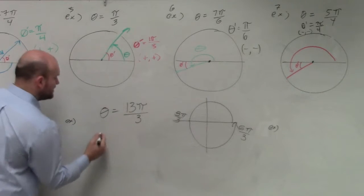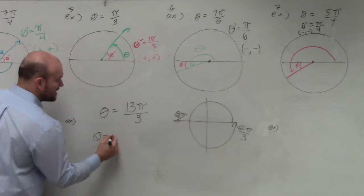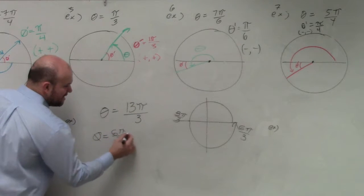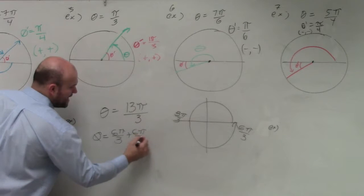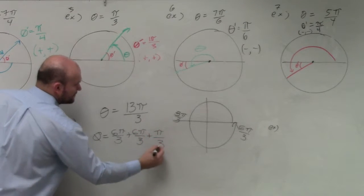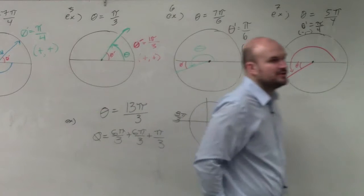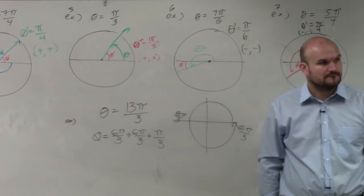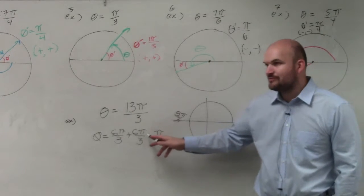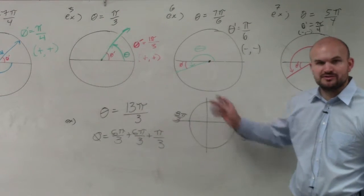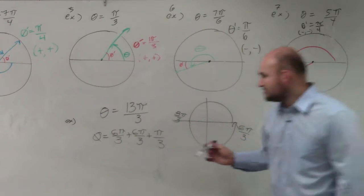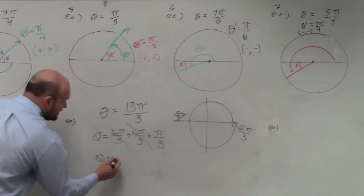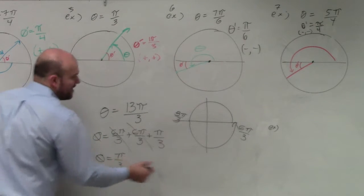What I'm going to do is rewrite this using the period as a fraction. So 13 pi over 3 is the same thing as 6 pi over 3 plus 6 pi over 3 plus pi over 3. If you were to add those fractions up, you would get 13 pi over 3. And what's important about 6 pi over 3 is that it's just a revolution around the circle. So really, 13 pi over 3 is the same thing as pi over 3.